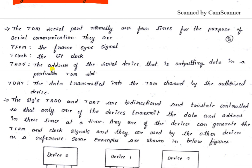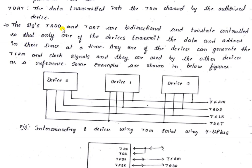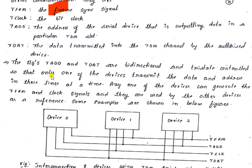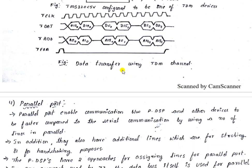The TDM serial port uses four lines: T_frame (frame synchronous signal), T_clock (bit clock), T_addr (address of the serial device, useful output in a particular TDM slot), and T_data (data transmitted into the TDM channel). The T_addr and T_data lines are bidirectional and tri-state controlled so that only one device transmits at a time.